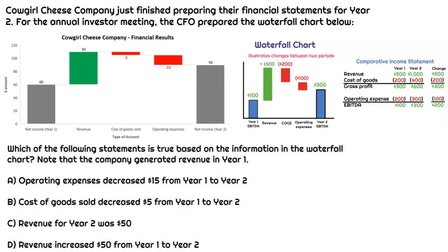Starting with the first option, it says operating expenses decreased $15 from year one to year two. When we look at that chart, it says negative 15, so it looks like it decreased. But when we look more closely, we're bridging net income from year one to year two. Because operating expenses have a negative impact on net income, this actually shows that operating expenses increased $15. That's why it's a negative impact when bridging net income — so that's a false statement.